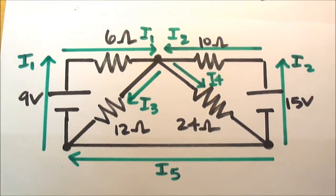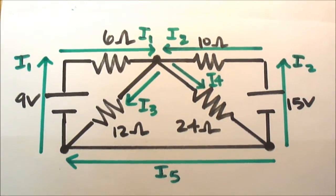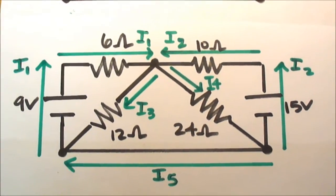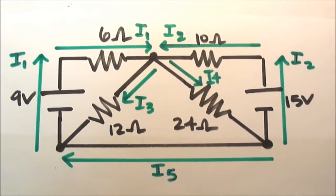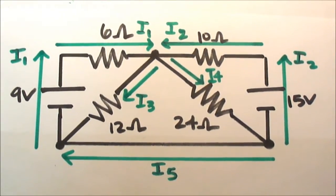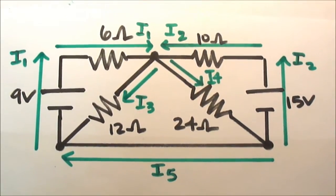Remember it doesn't matter which direction you draw your currents in. They're really just helping with calculations. If you go through your calculations and you get a negative answer, that just means that you drew your current in the wrong direction and that the actual current is in the opposite direction.